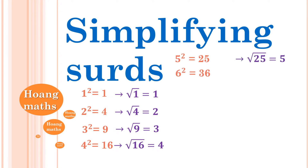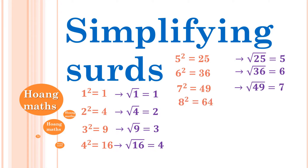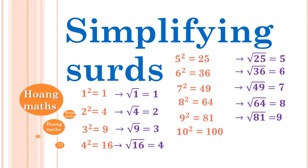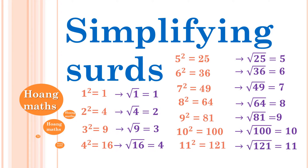And 36 follows that, so square root 36 is 6. And 7 squared is 49, you square root 49 gives you 7. And 8 squared is 64, square root 64 is 8. Then square root 81 is 9, and 10 squared is 100, so square root of 100 is 10. And square root of 121 is 11, because 11 squared is 121.